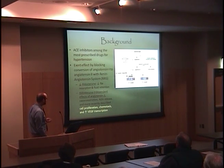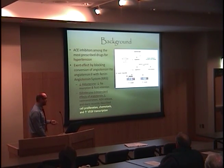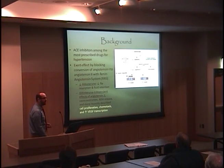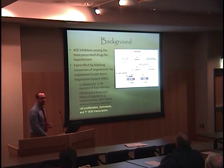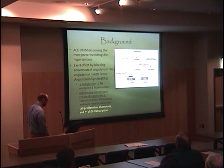If you look at this group outlined in yellow — increased cell turnover, the migration of cells, and elaboration of cytokines like VEGF — those are all key precursors to angiogenesis and neovascularization. So it's quite interesting to think that blockage of this cascade may affect those cellular activities as well.